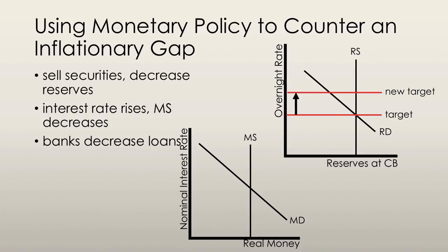When the economy is facing an inflationary gap, the central bank uses contractionary monetary policy to fight it. This means raising the target overnight loans rate. In order to achieve this outcome, the central bank must sell its securities to decrease bank reserves. Doing this decreases the supply of reserves and raises the overnight loans rate. The money supply also decreases and the quantity demanded of money decreases as well.